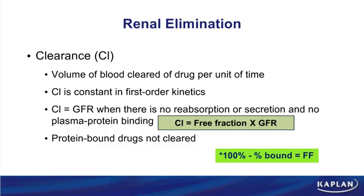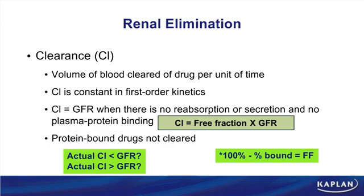Interpreting clearance numbers: if the actual clearance of a drug is less than GFR, then reabsorption must be occurring — the drug was filtered but some was reabsorbed back, so elimination is less than filtration. On the other hand, if the actual clearance is greater than GFR, then active secretion must be occurring — the drug is being actively secreted into the renal tubules, adding to the filtrate beyond what was filtered.